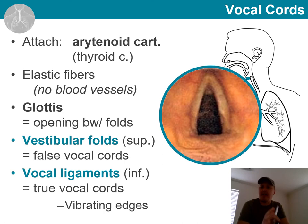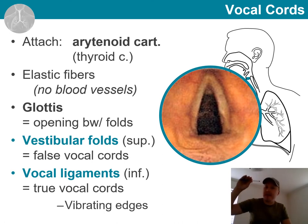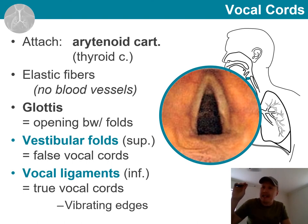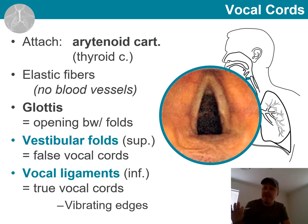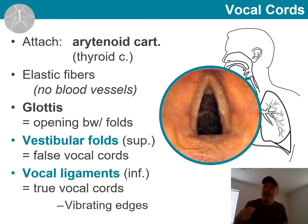There are two sets of vocal cords. More superiorly, we have what we call the false vocal cords — these are not really involved in vocal production. Then, more inferiorly, we have the true vocal cords. It is the edges of these that vibrate as the air stream passes through, and the voice is produced.